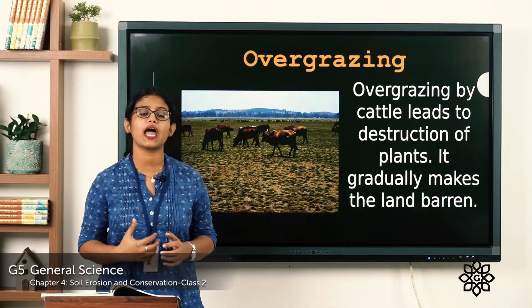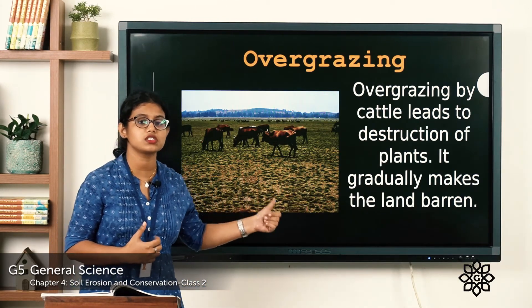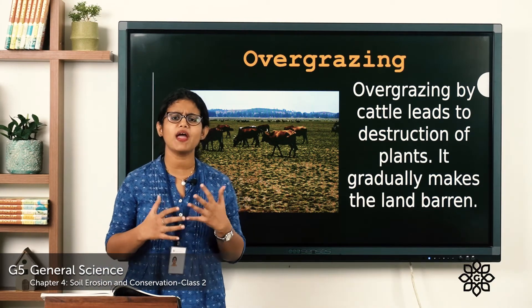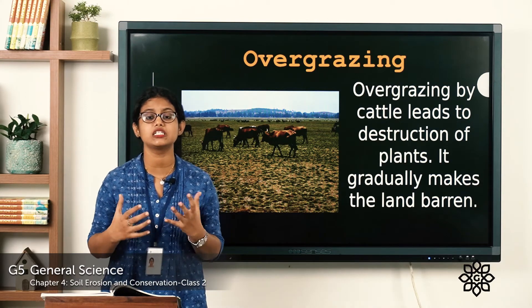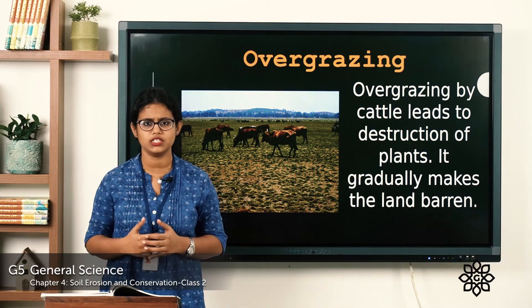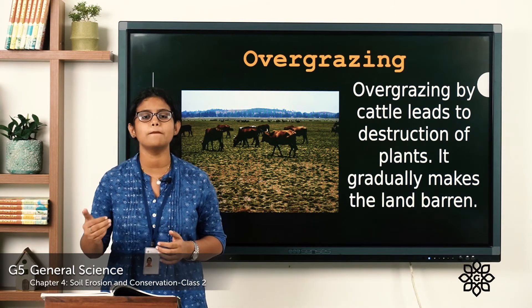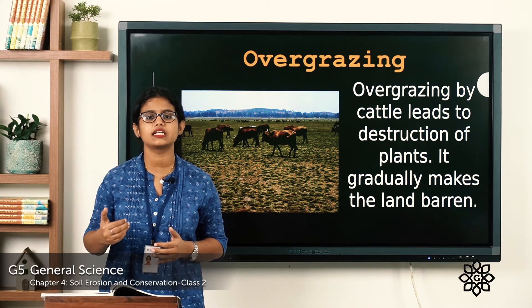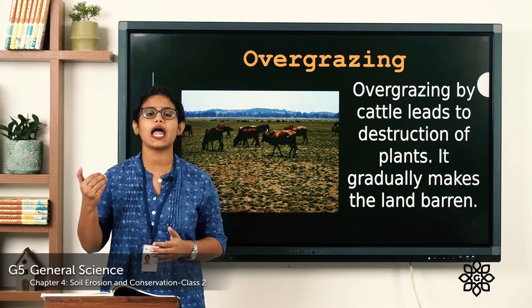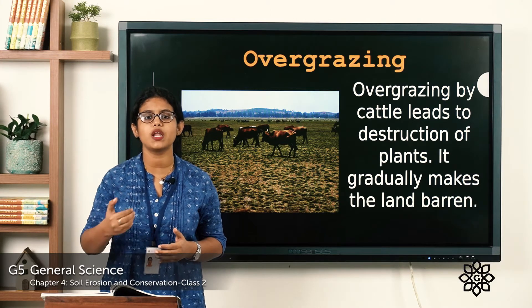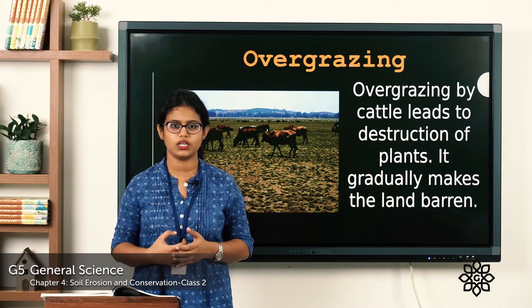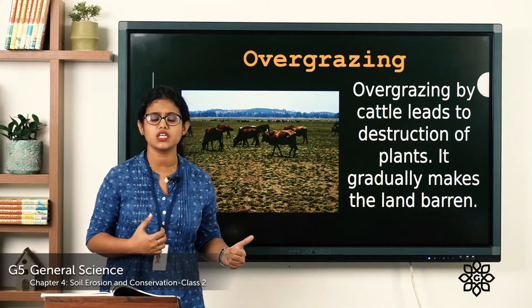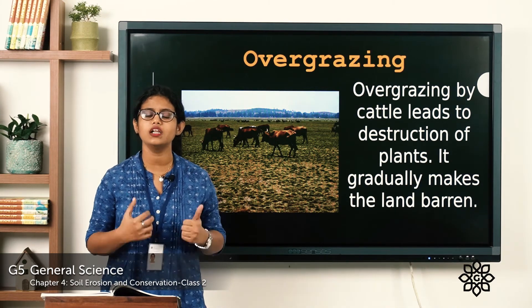Another human activity that leads to soil erosion is overgrazing. When too many animals eat grass in an area, the land gradually becomes barren. The bare land gets exposed to heat and sunlight, the top layer of soil gets easily washed away, and overgrazing leads to the destruction of plants — making it another cause of soil erosion.